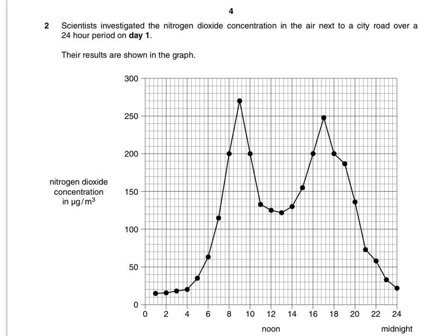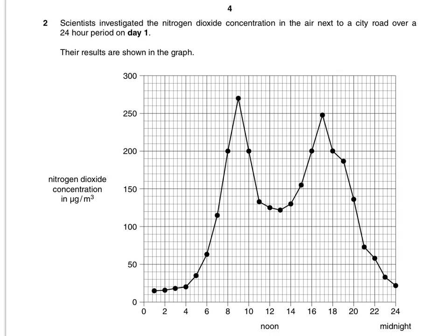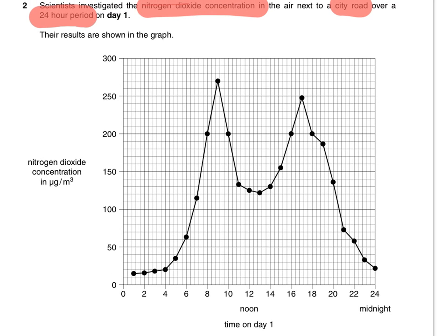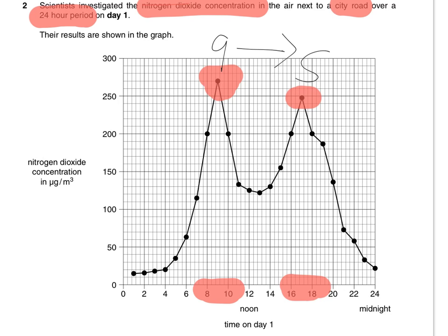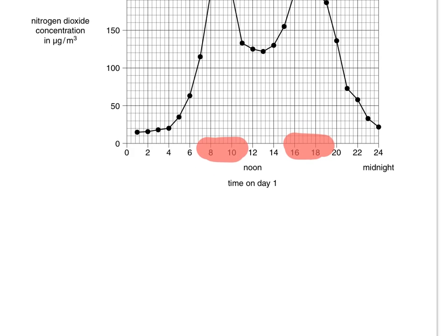Nine marks done — move on to question two. We've got a graph. Scientists are investigating nitrogen dioxide concentration in the air next to a city road over a 24-hour period. On the graph we can see two peaks: one around about nine o'clock AM and another around five o'clock. Straight away I'm thinking nine and five, and even if I don't do anything else with this graph I'm thinking nine to five — people working. It's probably a good idea to have a quick scan of the graph before anything else.